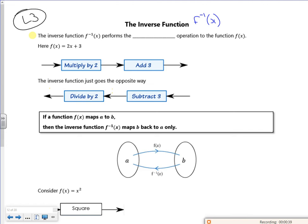So the inverse function performs the opposite operation to the function f(x). If I started off with x as an input, I'd multiply it by 2 to get 2x, and then I add 3 to it, I get 2x plus 3. So that's my f of x, that's what I've got.